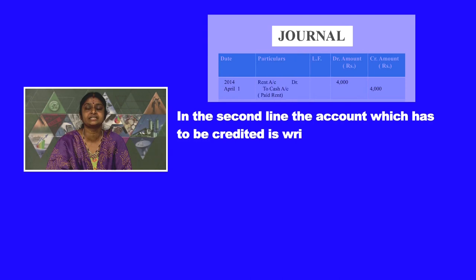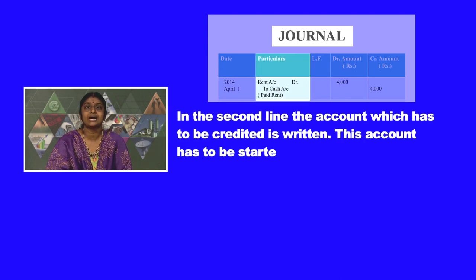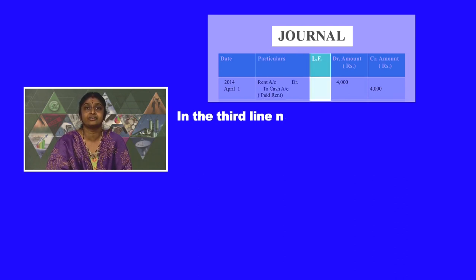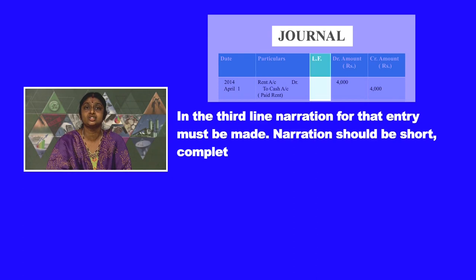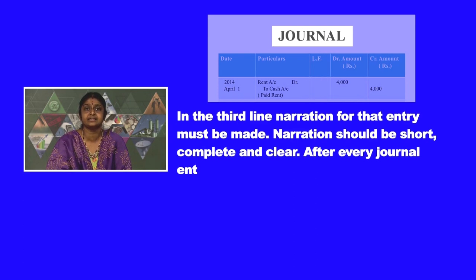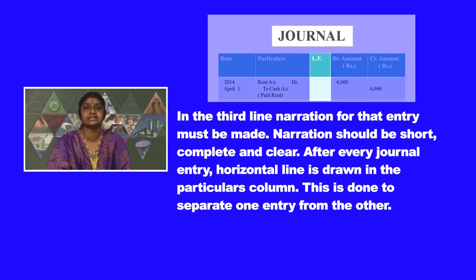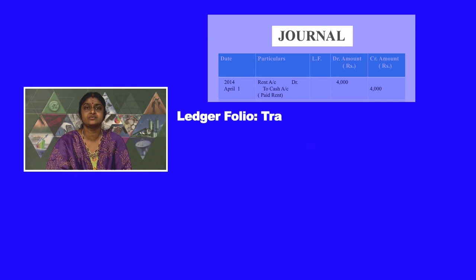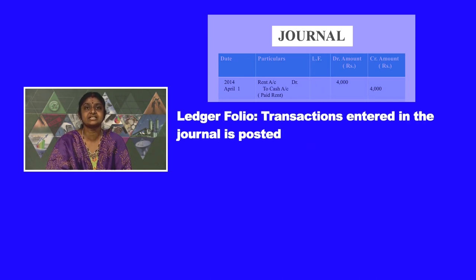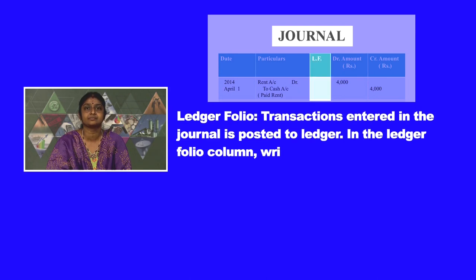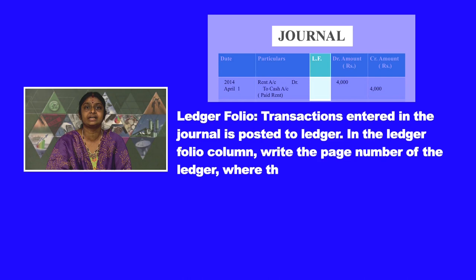The credited account has to be started with the preposition 'to'. In the third line of an entry, narration for that particular entry must be made. Narration should be short, complete, and clear. After every journal entry, a horizontal line is drawn in the particulars column to separate one entry from the other. In the ledger folio column, we write the page number of the ledger where the account is posted.